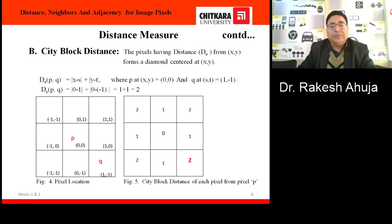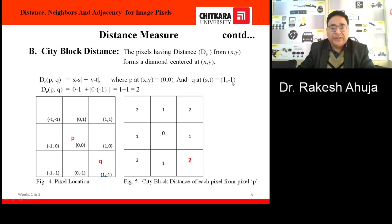Another way to measure the distance between pixels is city block distance. City block distance is defined by the formula: modulus of (x minus s) plus (y minus t). Using the same 3 by 3 image, with p at (0, 0) and q at (1, -1), putting all these values in the formula we get the value 2, meaning this pixel is 2 units apart from the central pixel p. Likewise, we can calculate the city block distance for the rest of these pixels.